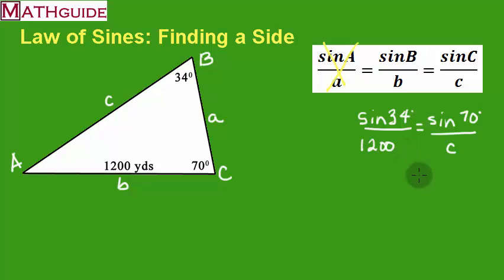So let's multiply. I'm going to take 1,200 times the sine of 70. So 1,200 sine of 70. I multiply these guys together. That's going to be C sine 34. And those two values have to be equal to each other.